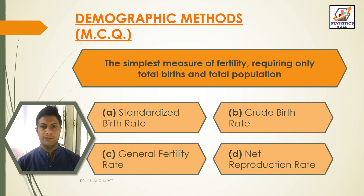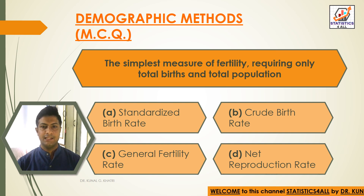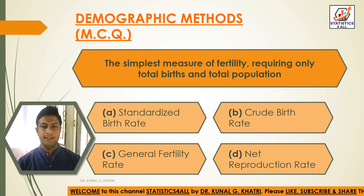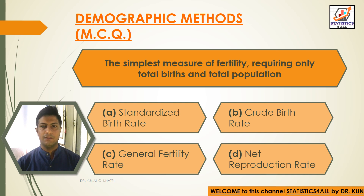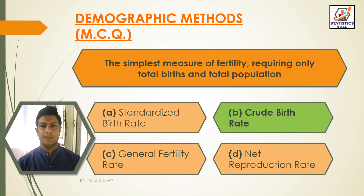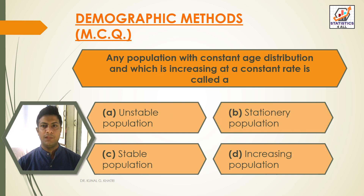Next question: the simplest measure of fertility requiring only total births and total population — Option A: standardized birth rate, Option B: crude birth rate, Option C: general fertility rate, Option D: net reproduction rate. The answer is Option B — crude birth rate is the simplest measure of fertility requiring only total births and total population.